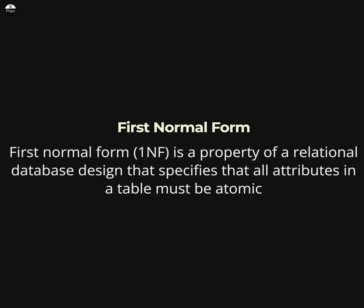First normal form is a property of a relational database design that specifies that all attributes in a table must be atomic. In other words, each attribute must be a single value from an atomic domain rather than a composite value made up of multiple smaller values.